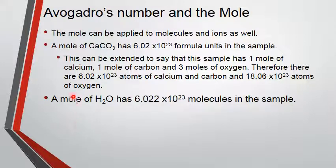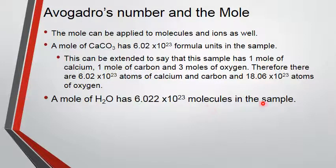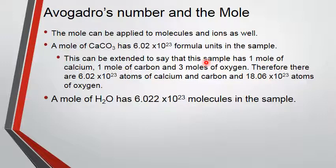You can do the same thing with a covalent compound or molecule. If we have a mole of water it has 6.022×10²³ molecules. We say 'molecules' because it's covalently bonded. The terminology differs: for ionic compounds we say 'formula units,' and for covalent compounds we say 'molecules,' because a molecule is defined by those covalent bonds.